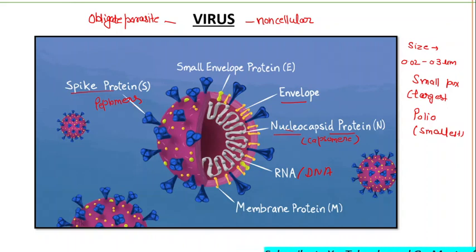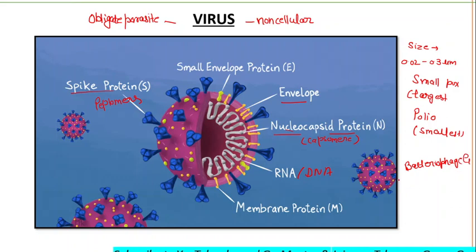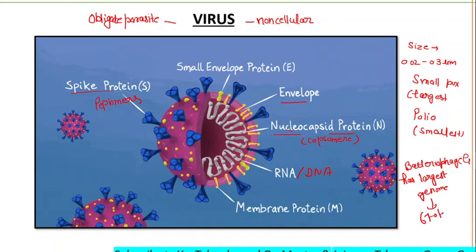The viral genome is of smaller size overall, but the largest genome belongs to bacteriophage G. Bacteriophage G has the largest genome at about 670 kilobase pairs.